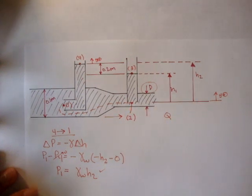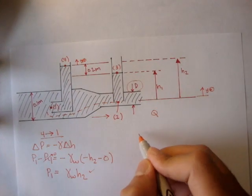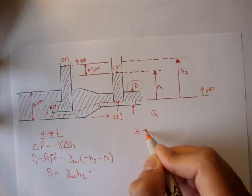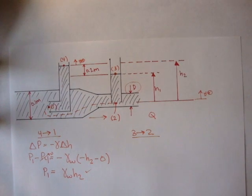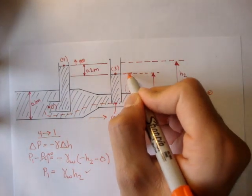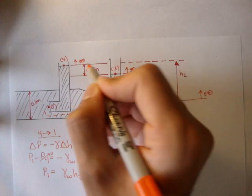How about the pressure at two? So we can go from three to two. Let's set our datum, again, maybe here, just temporarily.